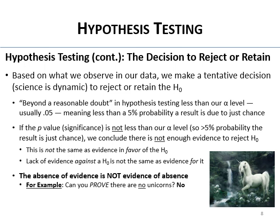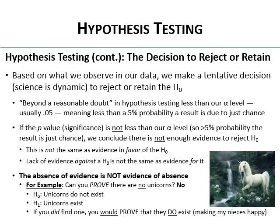For example — can you prove there are no unicorns? No, you cannot. You could search the planet, never find a unicorn, and that still doesn't prove they don't exist. Your null here would be that unicorns do not exist; your alternative is that they do. You can never prove unicorns don't exist — you can't search all animals in all spaces across all time. But you can provide evidence against the null by finding a unicorn, which would actually disprove the null.